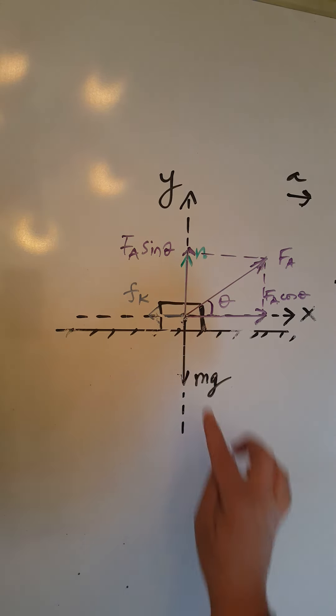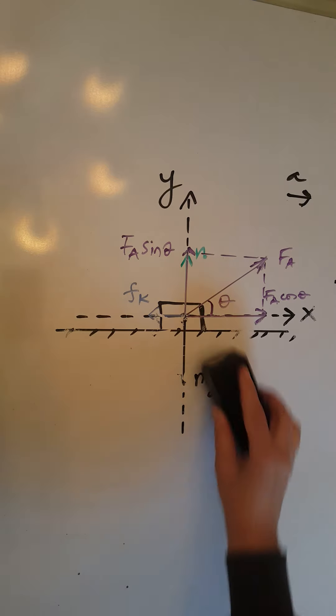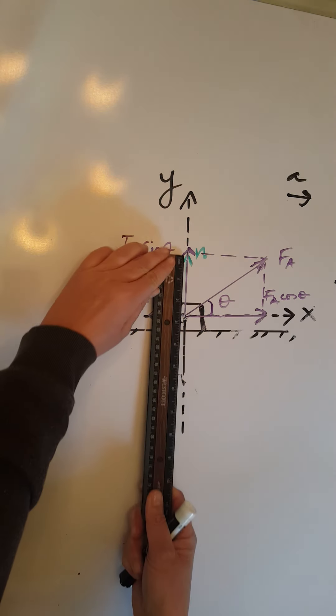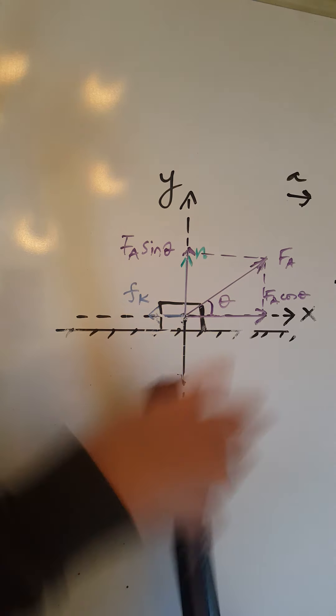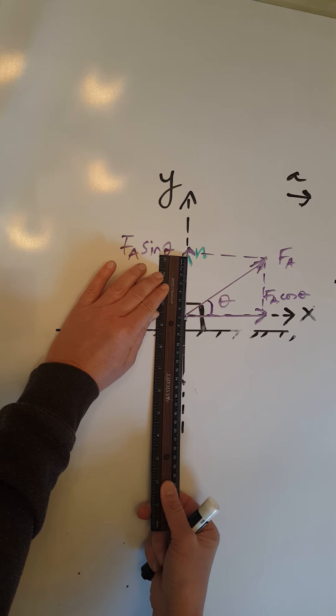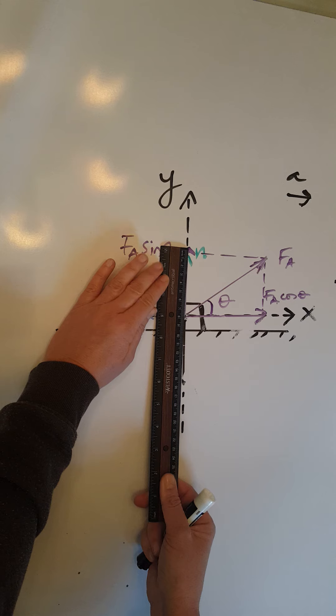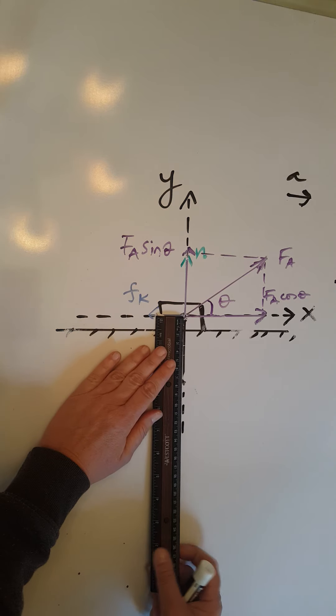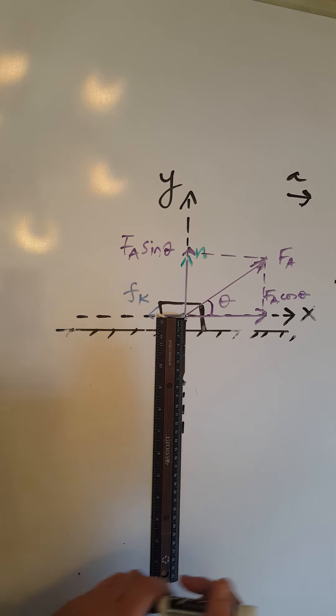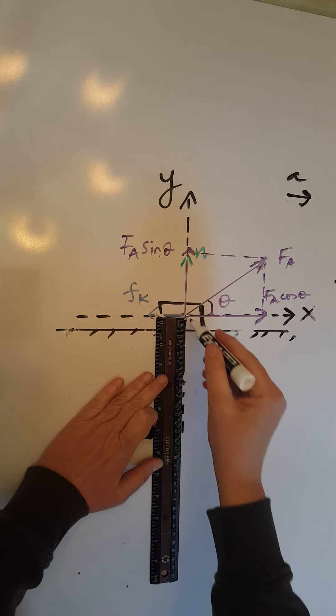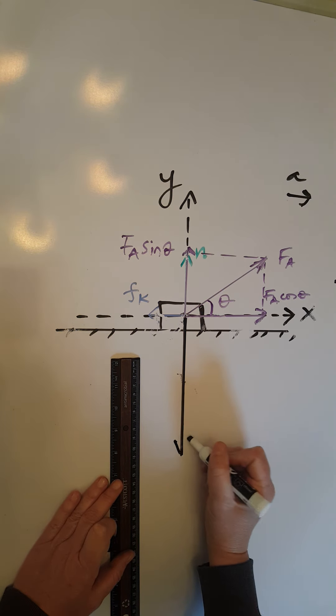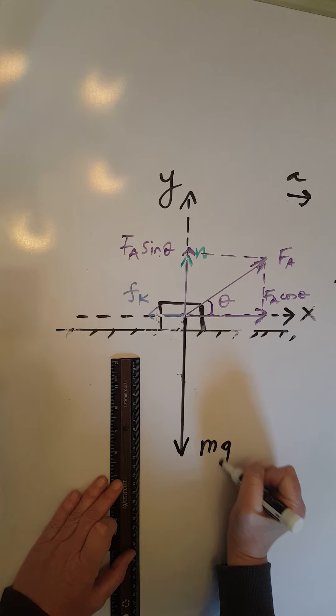So I am going to change this by making Mg much longer. How much longer? Well, let's measure. The normal force here is seven centimeters. The component, the vertical component of F a is eight centimeters. Seven plus eight is 15. So I need to go down 15 centimeters on the y-axis all the way here.